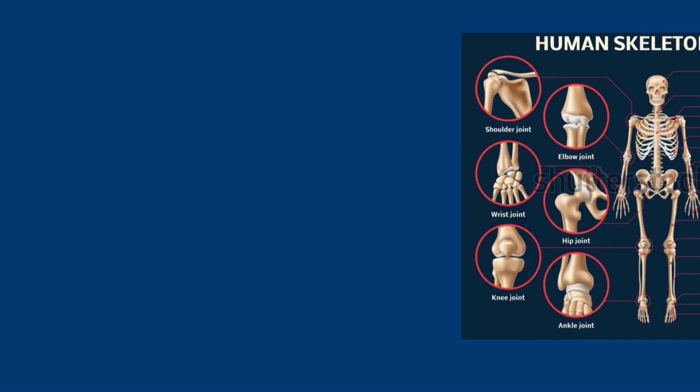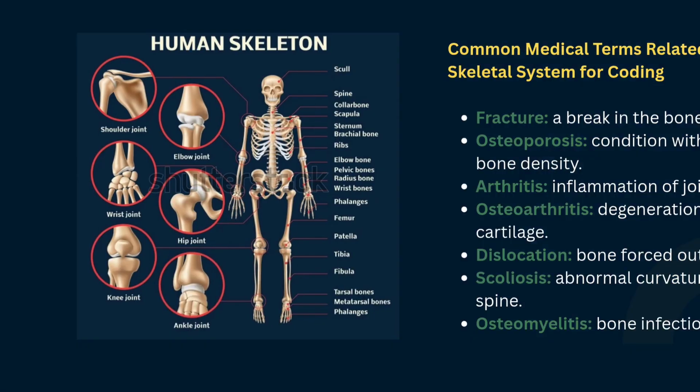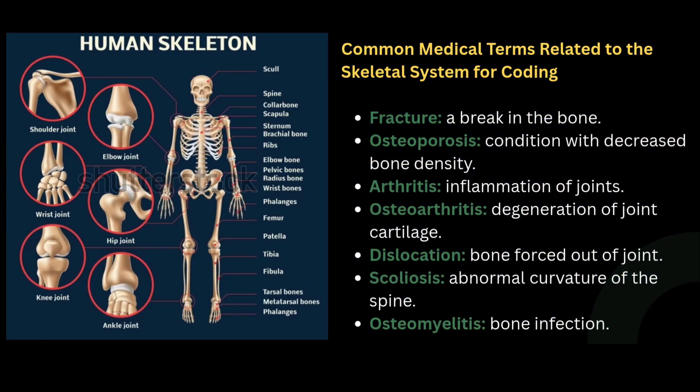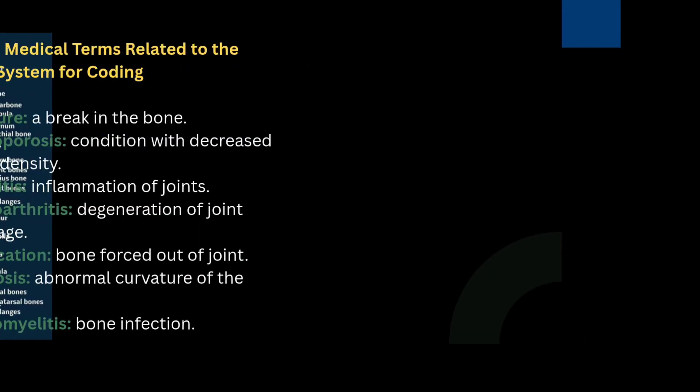Next, the common medical terms related to the skeletal system are: fracture — a break in the bone; osteoporosis — a condition with decreased bone density; arthritis — inflammation of joints; osteoarthritis — degeneration of a joint; and dislocation — bone forced out of the joint.